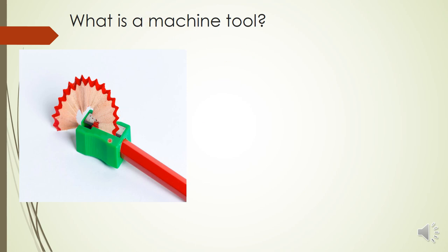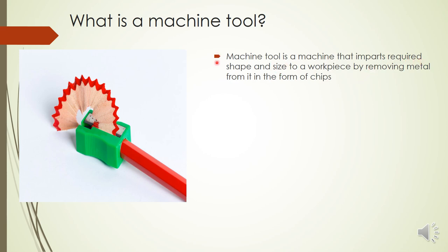In a machine tool, instead of a pencil you have your workpiece — made of mild steel or some other metal — and instead of the sharpener you have your machine tool. Just as a sharpener has a blade, every machine tool uses a cutting tool. A machine tool is a machine that imparts the required shape and size to a workpiece by removing metal in the form of chips.